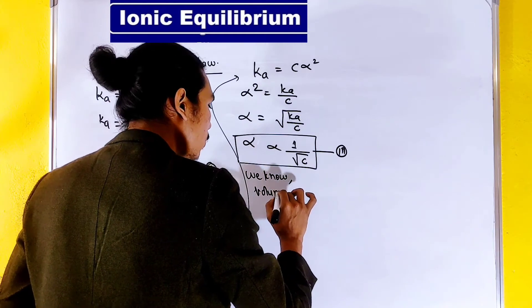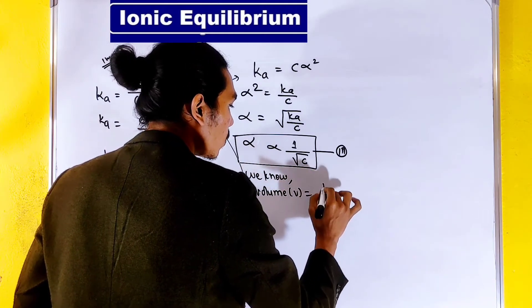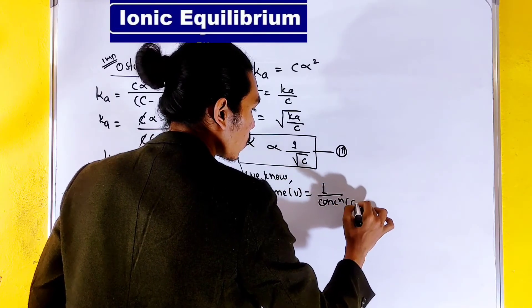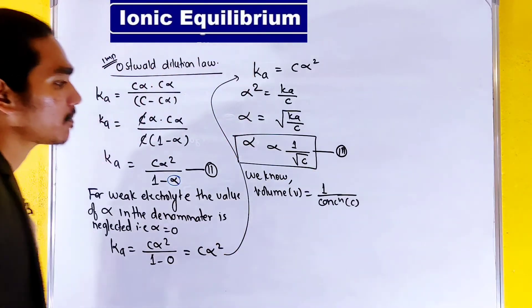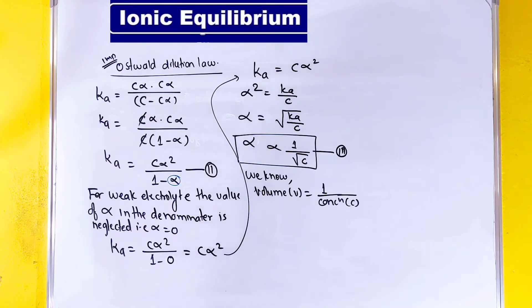Volume V is equal to 1 divided by concentration C. So 1 by C equals V. Using this, equation 3 is going to be modified.